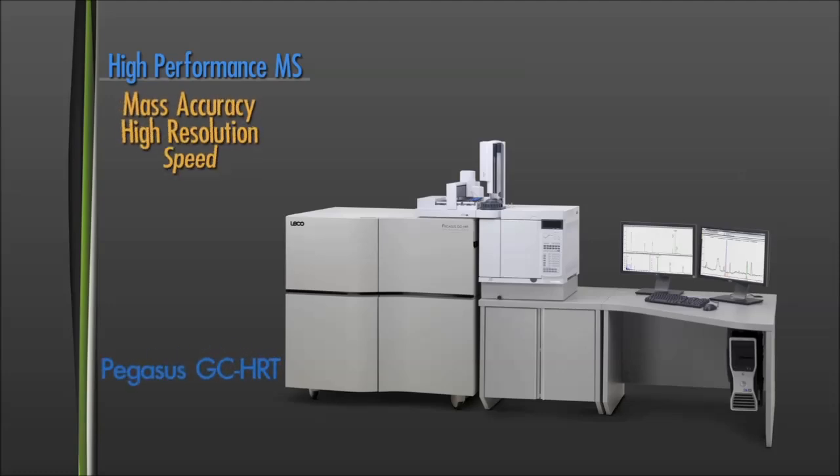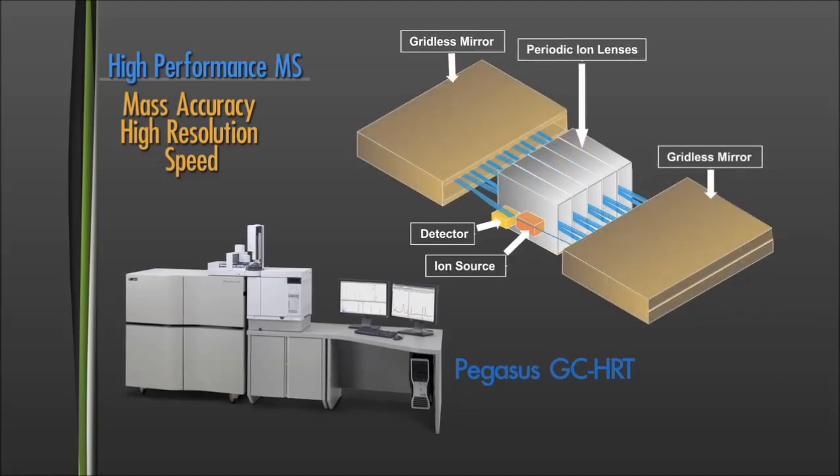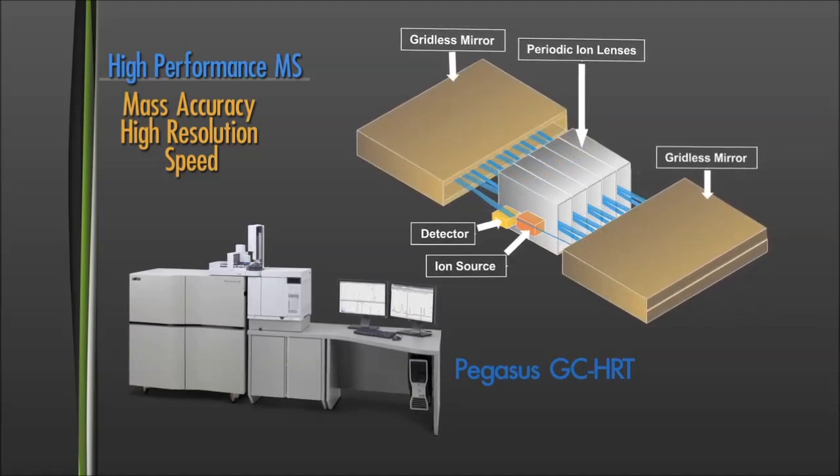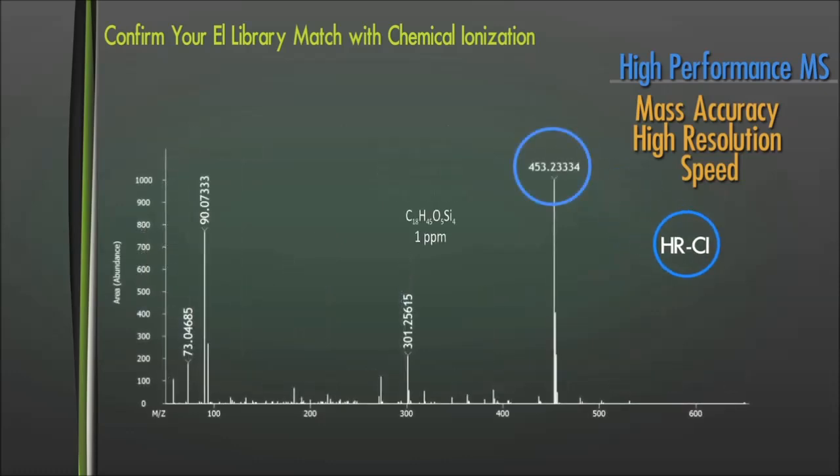The facilitation of unknown identification is vital to scientists. The Pegasus GC-HRT provides this key capability with its industry-leading folded flight path technology designed to minimize mass error, which reduces the number of matching formulas for unknowns. As a complementary tool to EI, high-resolution chemical ionization preserves molecular ions while keeping the same mass accuracy.